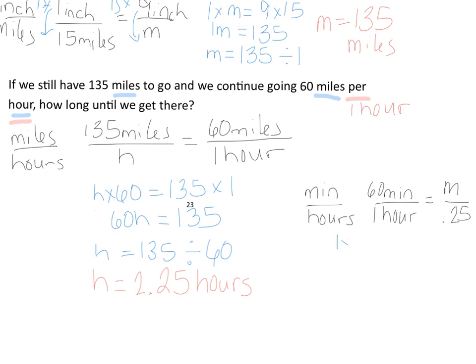So 1 times m, 60 times 0.25. 1m is equal to 15. We divide m by 15 divided by 1 to find out that m would equal 15 minutes. So if we wanted to convert h we could say that it would be two hours and 15 minutes.